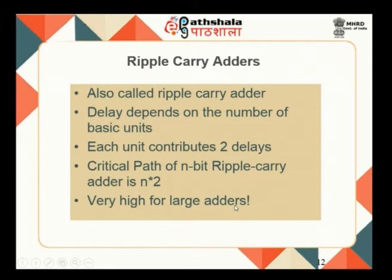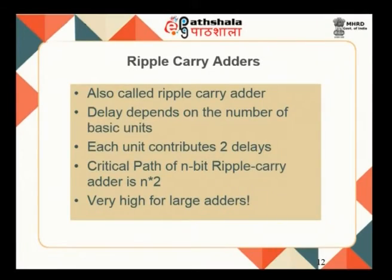The 32-bit adder described earlier is called a ripple carry adder, because the carry ripples from one stage to another — every full adder depends on the previous stage's carry. In a ripple carry adder, the delay depends on the number of stages: any sum-of-products evaluation takes 2 delays, so every basic unit takes 2 delays. For a 32-bit adder, that is 64 delays total — 2n delays for an n-stage adder — which is very high for large adders.